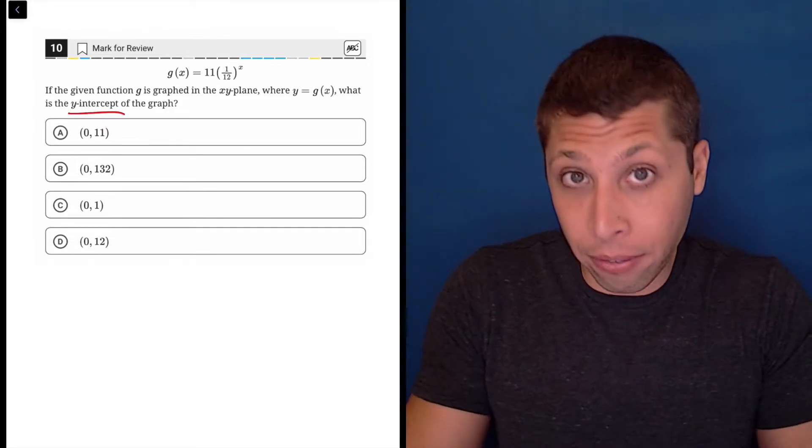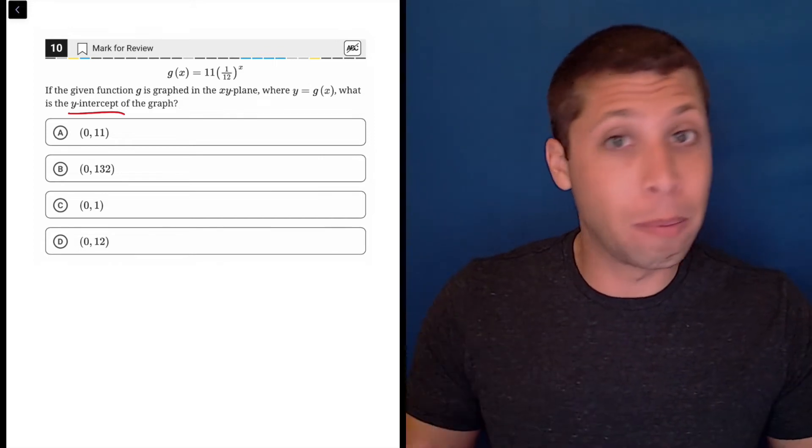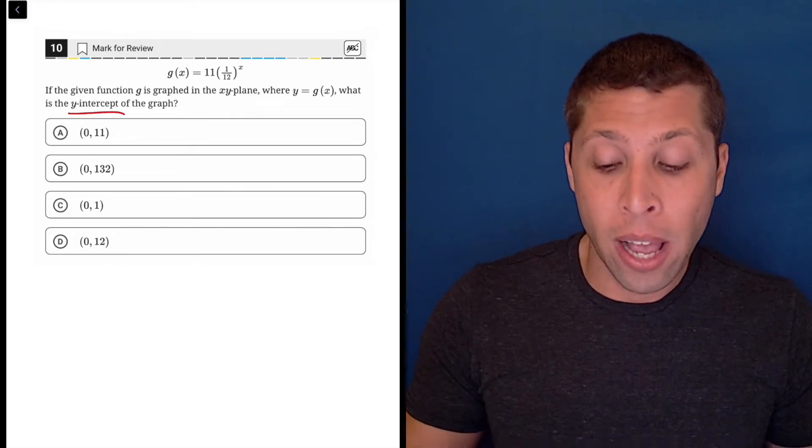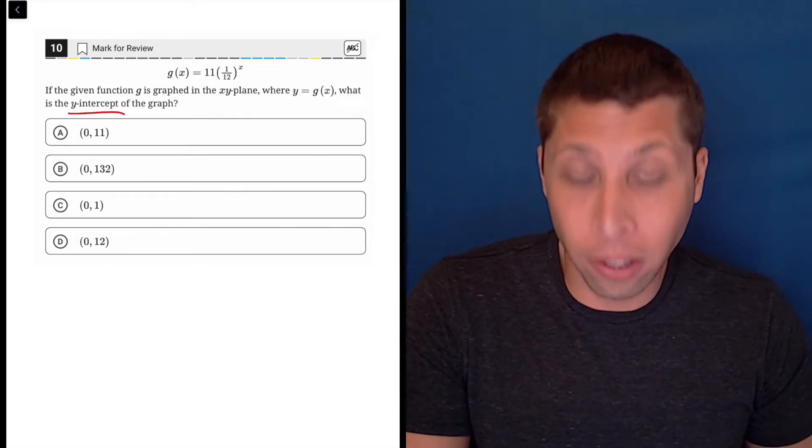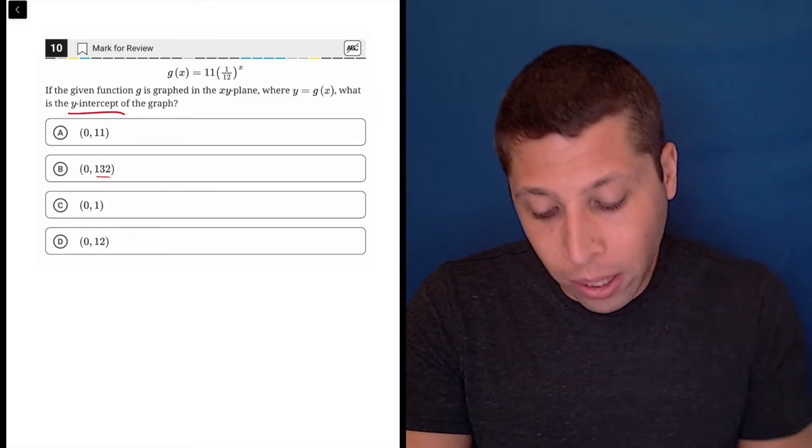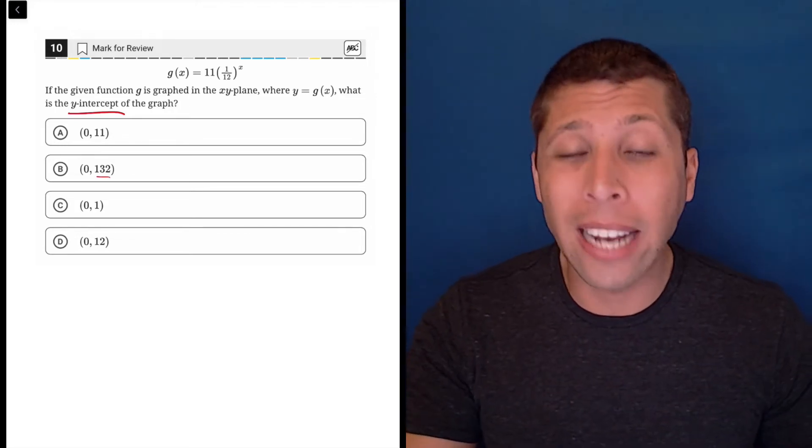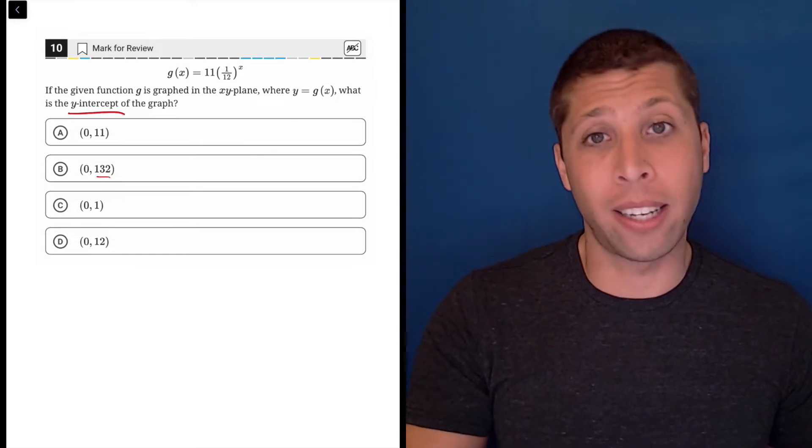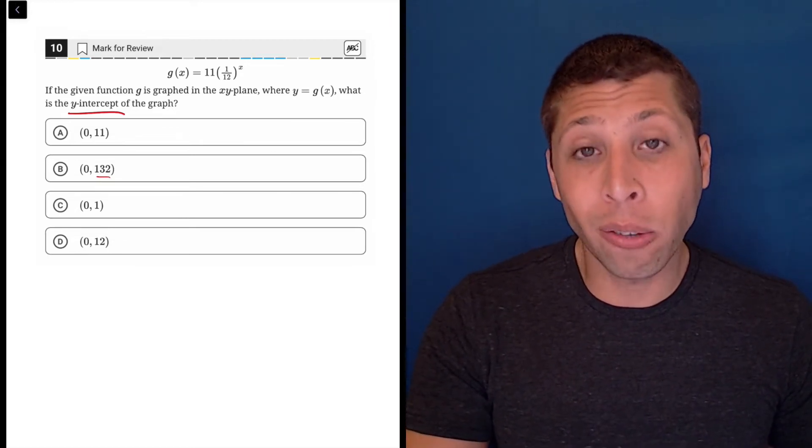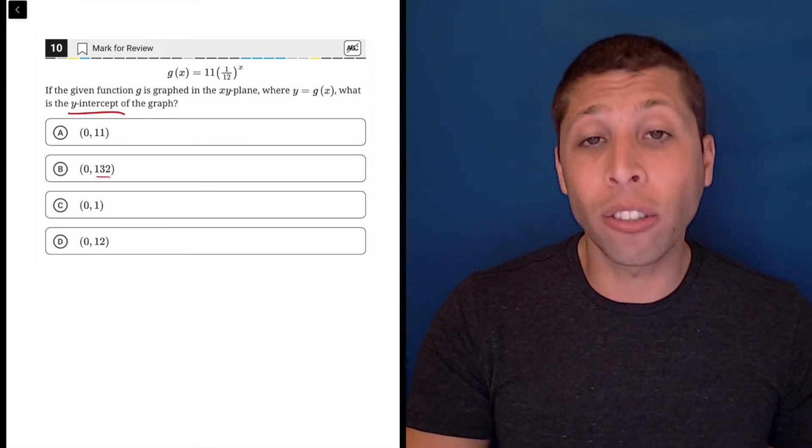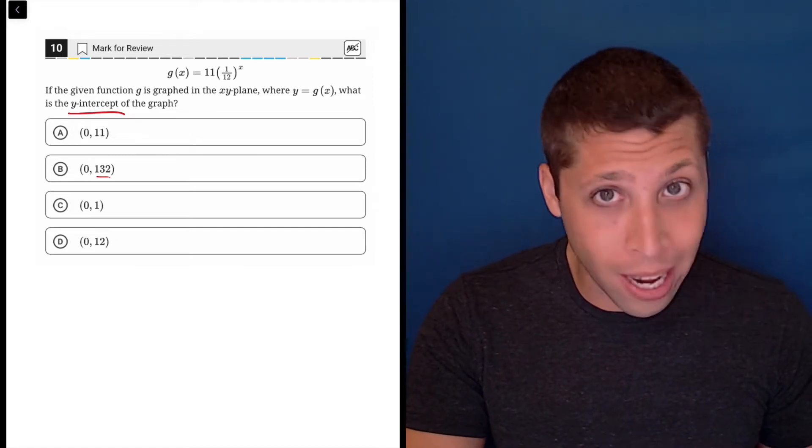You could graph this in your Desmos calculator that's built into the SAT now and look for the y-intercept. The problem is, if it's something like 132, you're going to be scrolling for a while. That's a pain. To be quite honest, the algebra here is not only easy, but it's essential that you understand it. So I'm going to do the algebra only here.